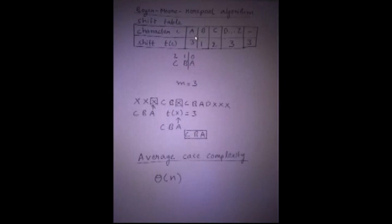Let's walk through the table now. The character A has the entry 3, which is equal to m, but we could say that the character occurs in the pattern.